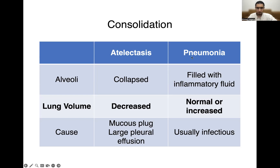On the other hand, when you look at a lung that has pneumonia, the alveoli become filled with inflammatory fluid. With that, the lung volumes will be either normal or increased. The cause of pneumonia is usually infectious. So there's quite the distinction here between lung collapse, which is a small atelectatic lung, and pneumonia, which is an inflamed lung that is increased in size or at least normal in size.